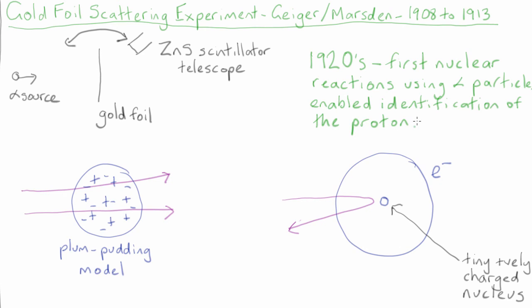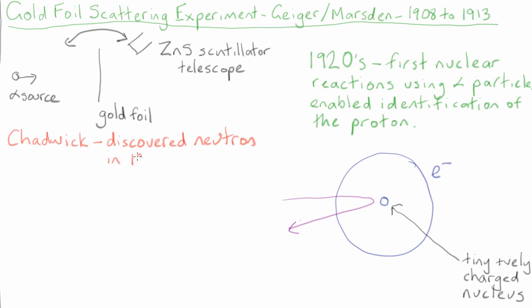They then observed that some elements can have nuclei with different masses, and this eventually led to the discovery of the neutron by Chadwick in 1932. By this stage, all the ingredients for our understanding of the atom were now known.